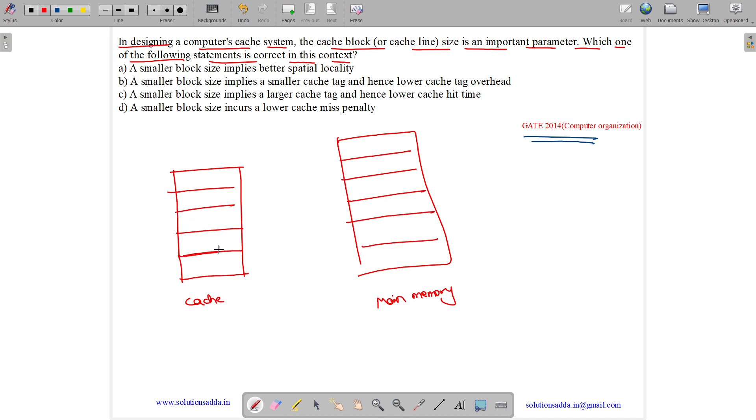These cache parts are called cache lines or cache blocks. Only one block - this block size is equal to this block size. And the entire block is moved during a cache miss. So let us see.